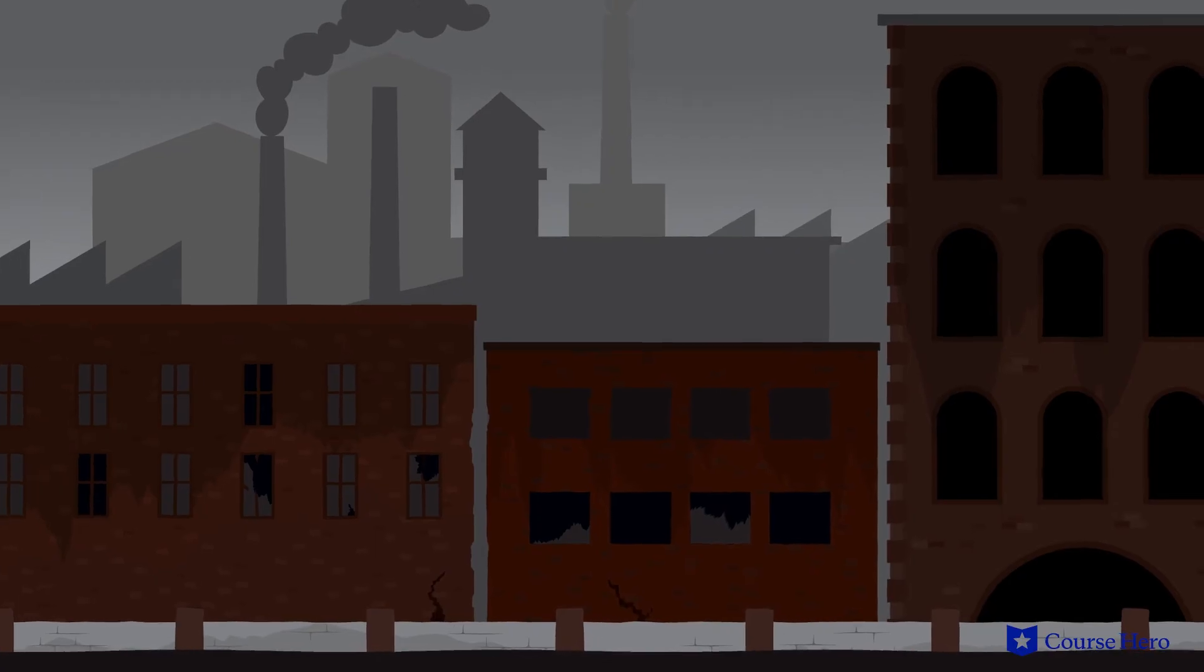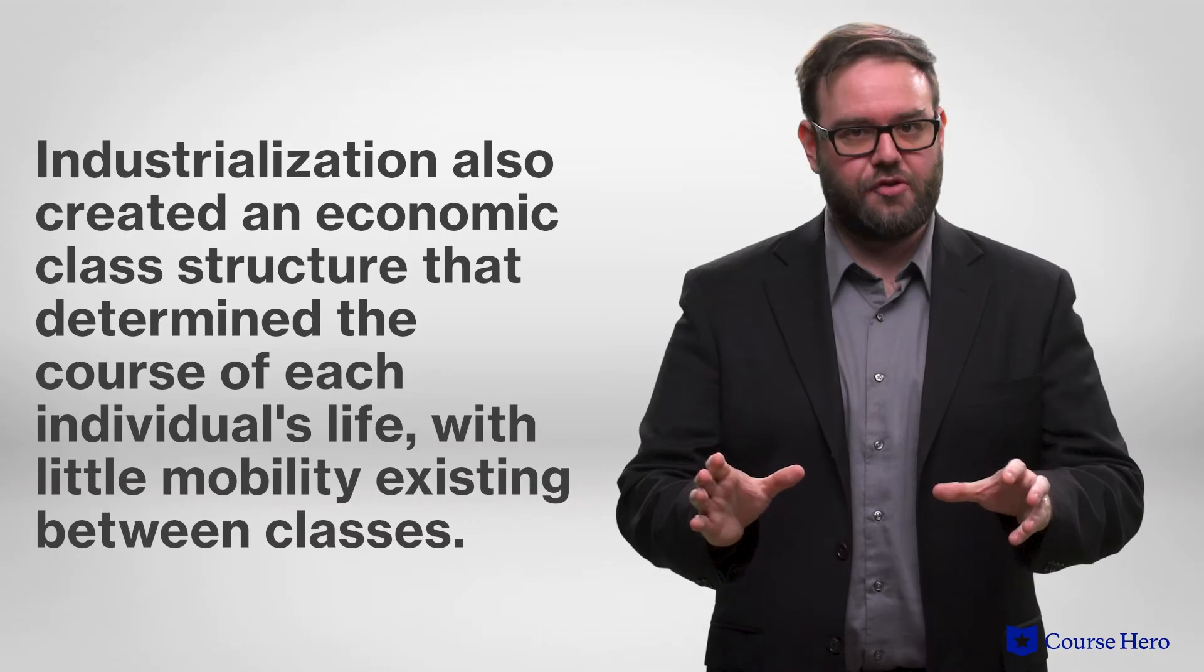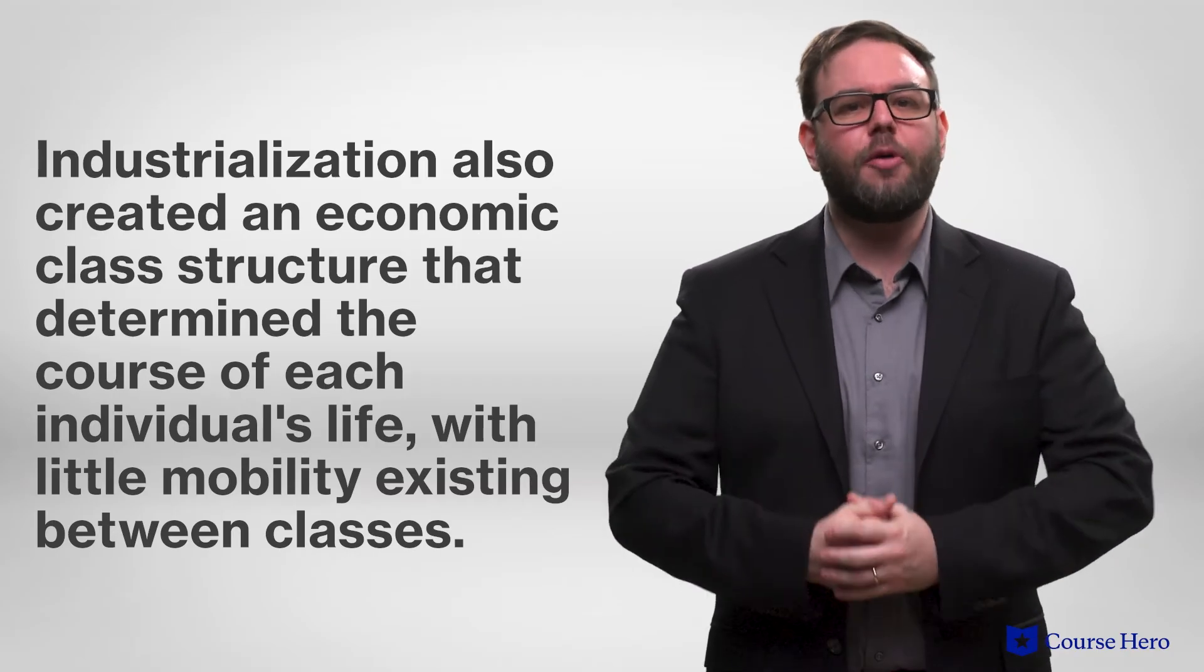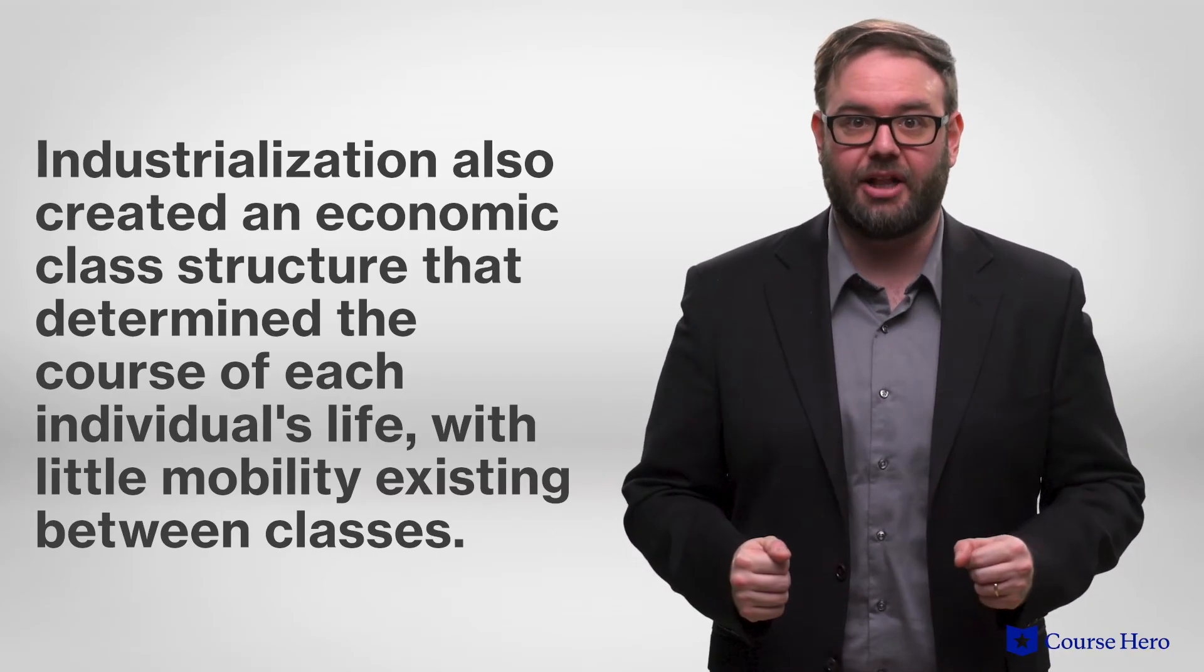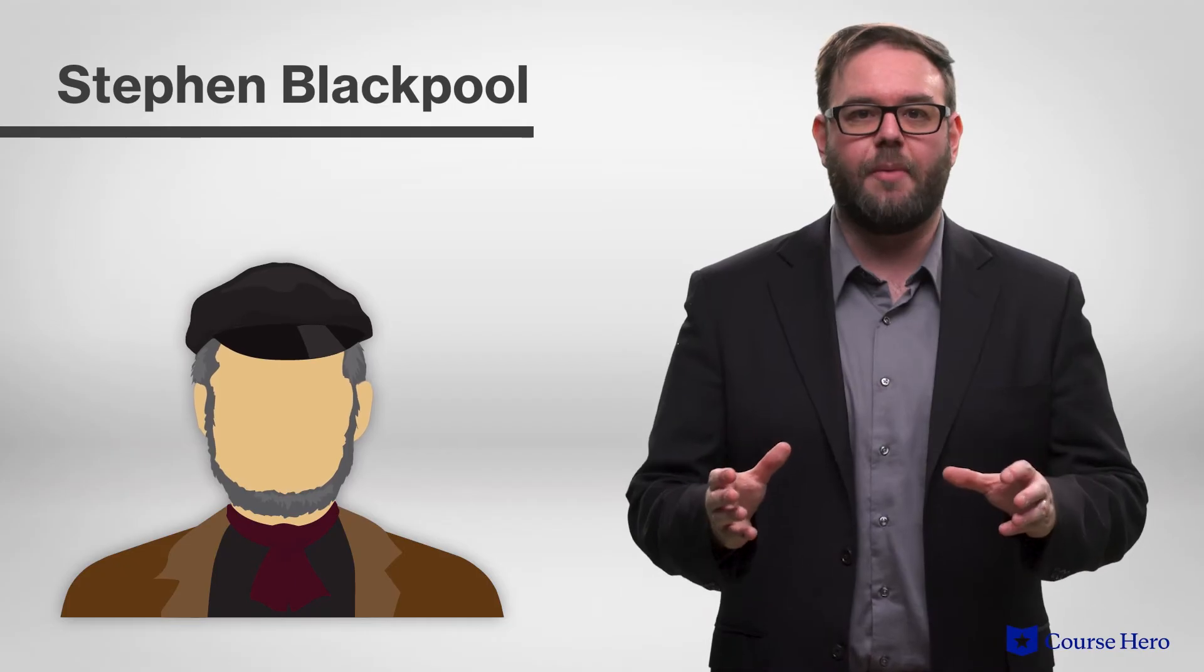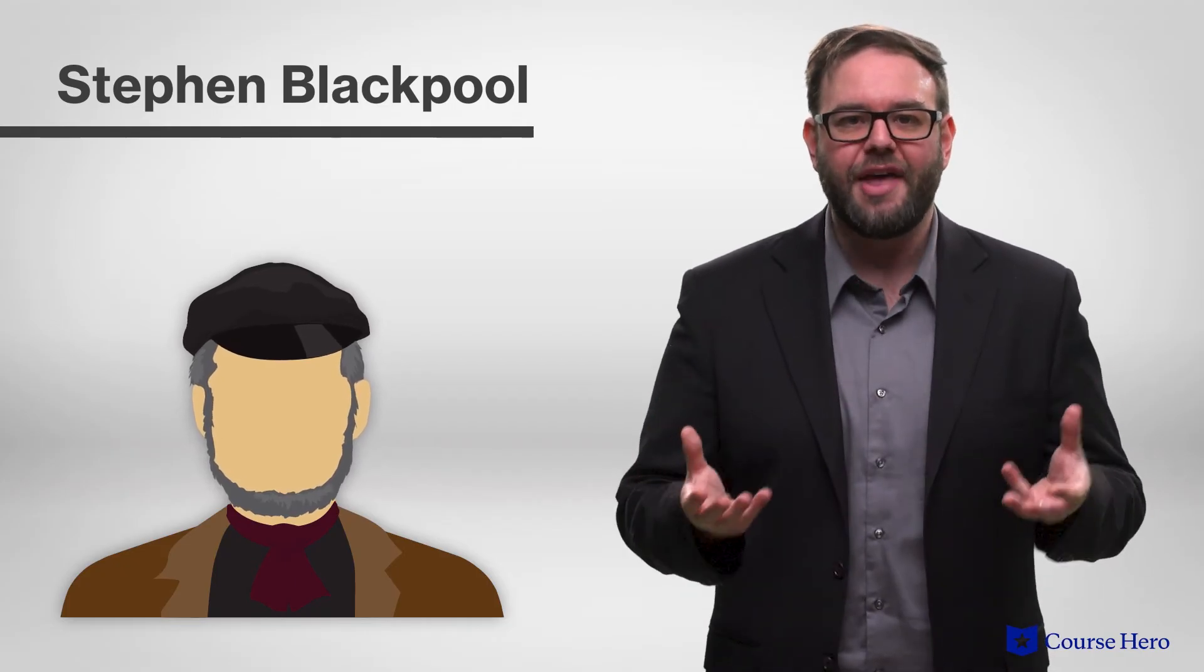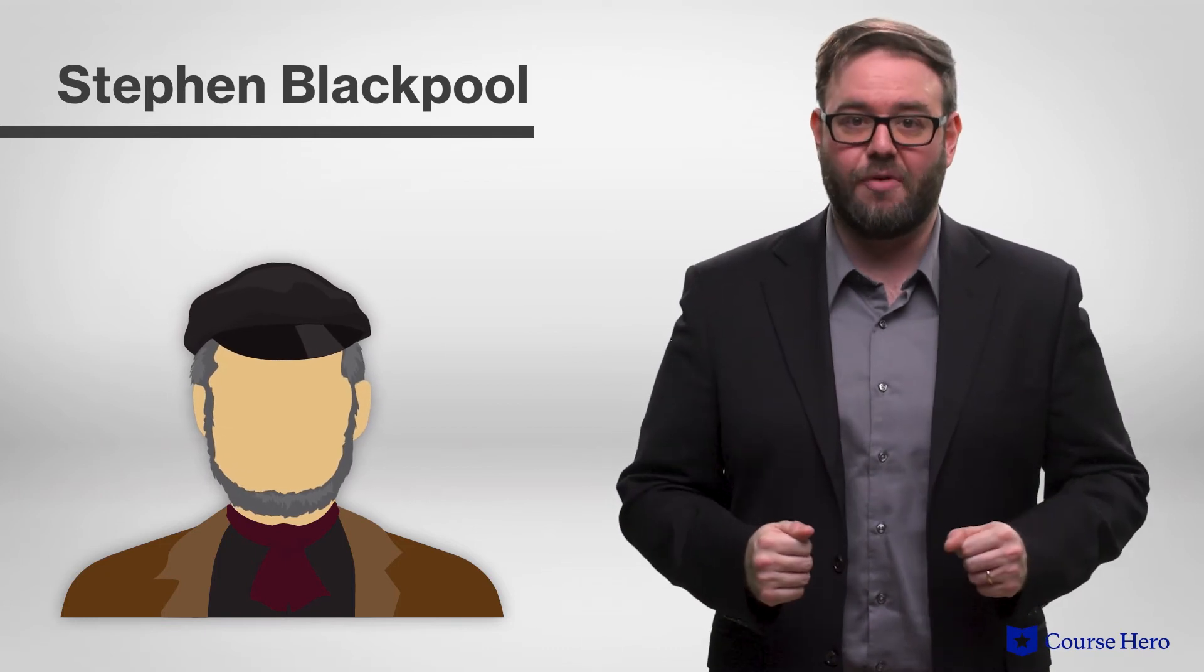Industrialization speaks to the people of Coketown, where physical pollution reflects the pollution present in the residents' minds and spirits. Industrialization creates an economic class structure that determines the course of each individual's life, with little mobility existing between classes. Stephen Blackpool illustrates the fate of most people born into poverty. Stephen Blackpool illustrates how if someone is born with a little bit of wealth, he may be able to grow that wealth, but if a man has nothing, he's likely to remain with nothing.